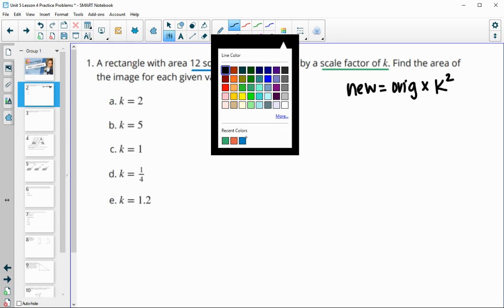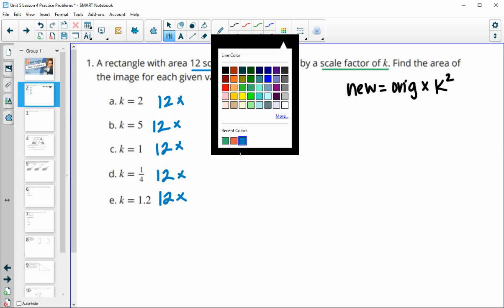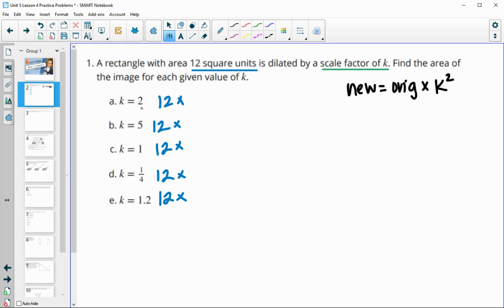So we're going to take this original area of 12 in each of these problems. So this 12 represents the original area. And then we're going to multiply the original area by our scale factor squared. And so the scale factor is this K value. So we're going to multiply by 2 squared in this first one, by 5 squared in this second one,